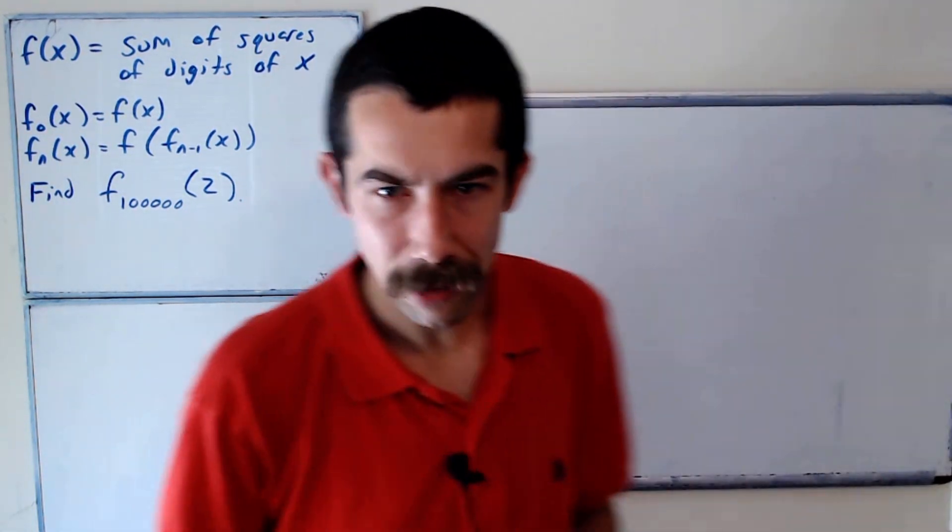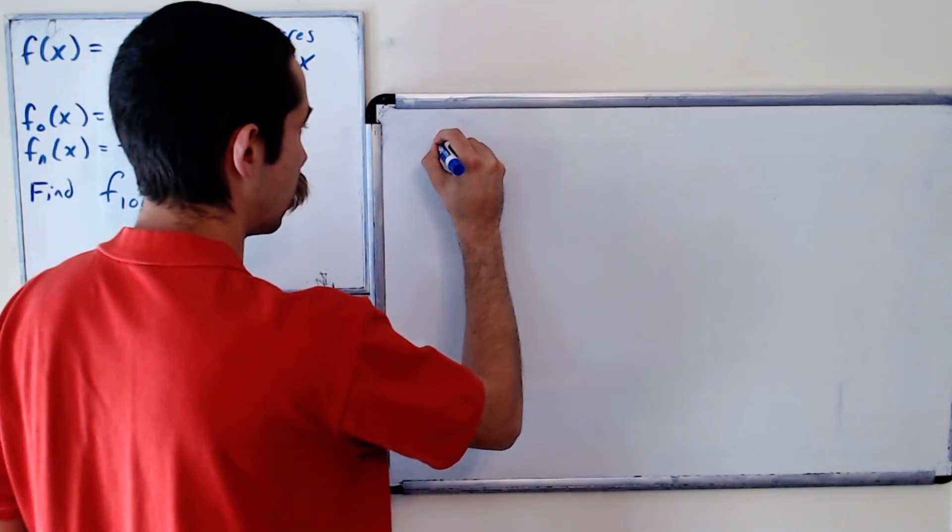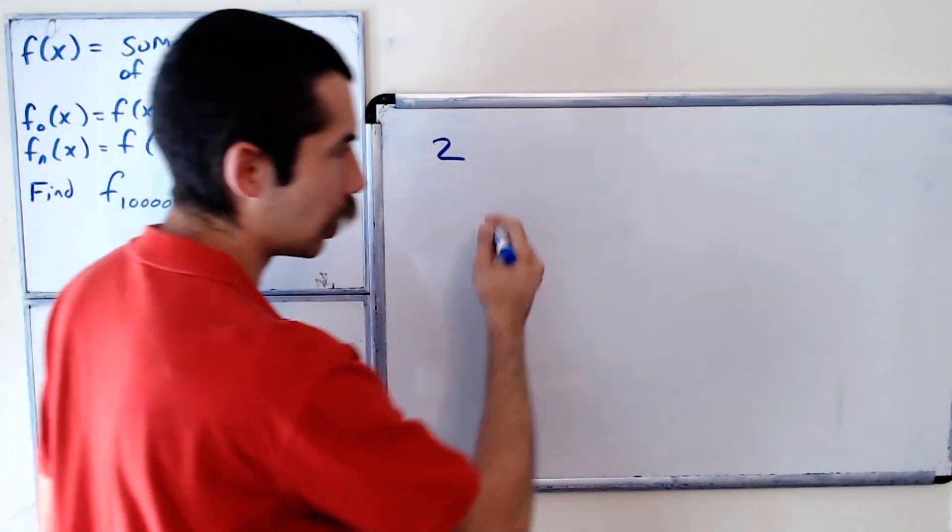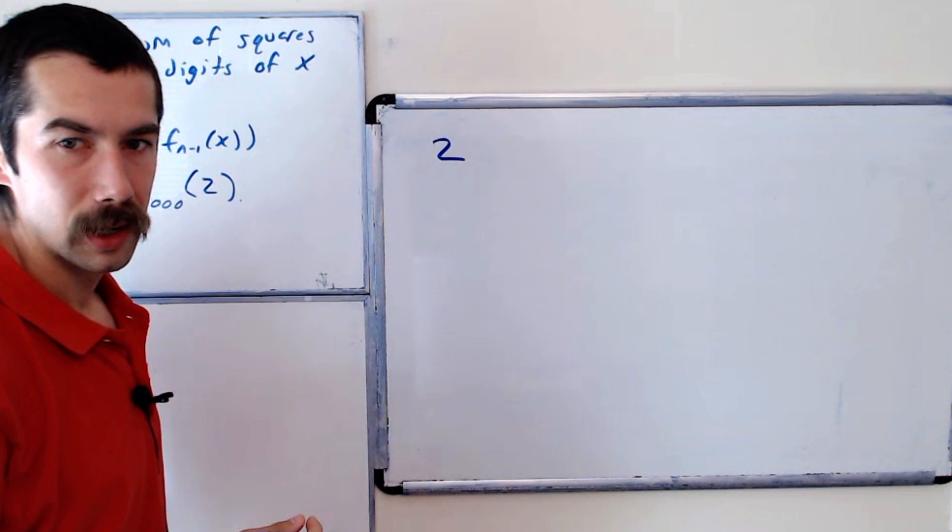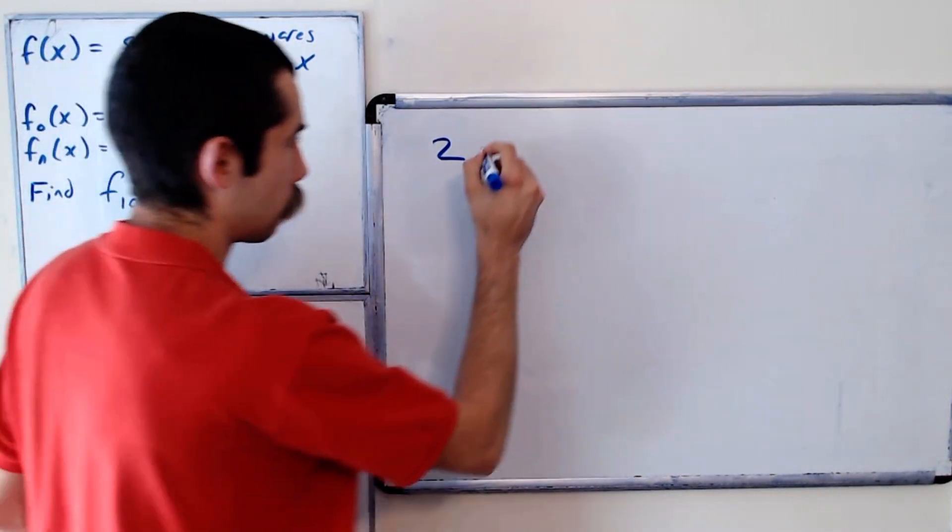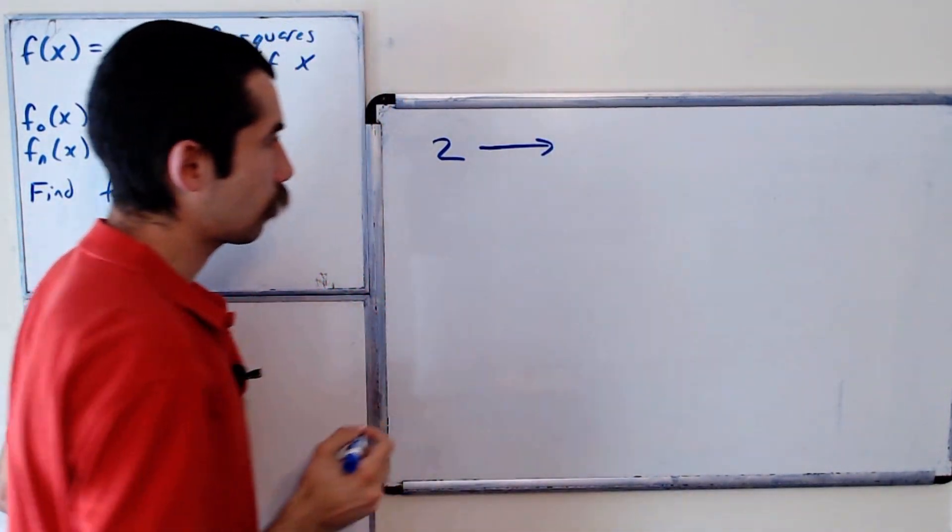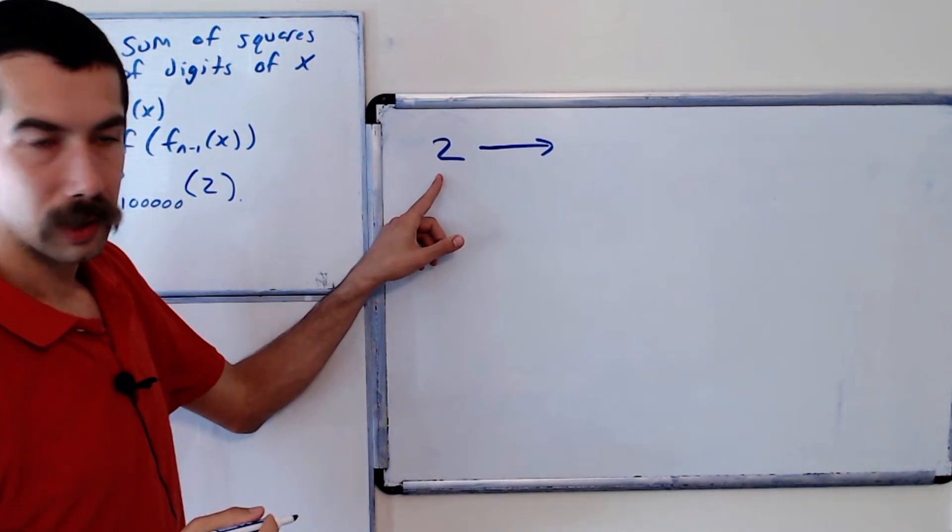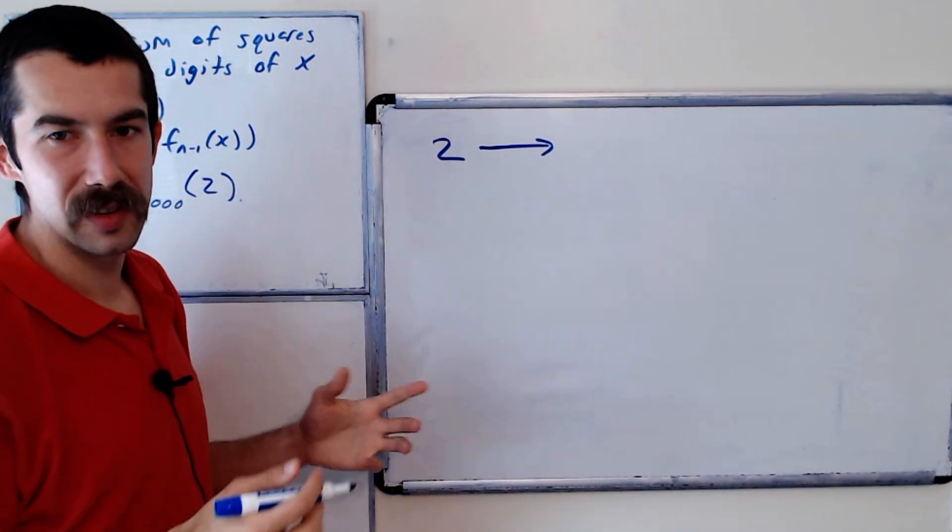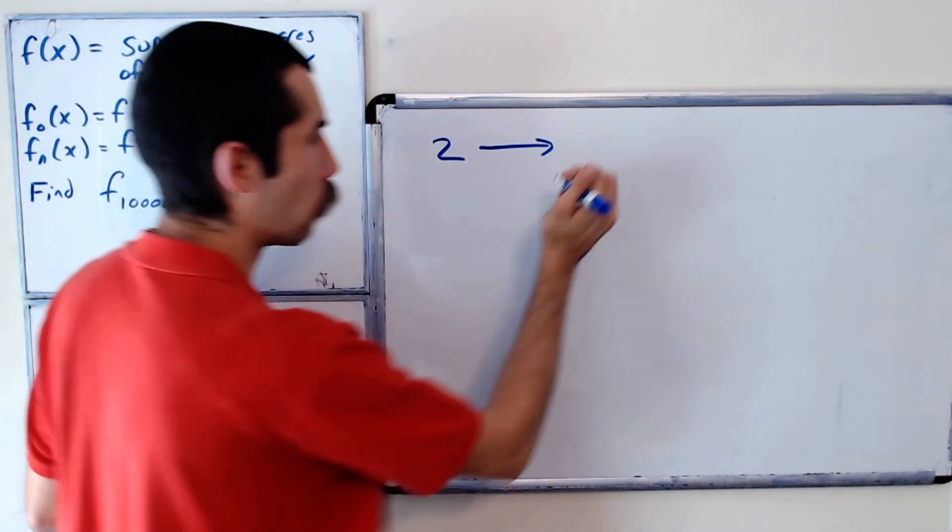Okay, so f_0 is 2. I'm going to draw kind of a map of what happens. So we start with 2. f of 2, well what's f? The sum of the squares of the digits. So 2 squared, there's only one digit, is 4.